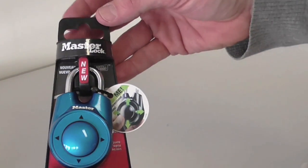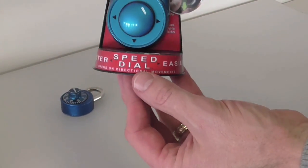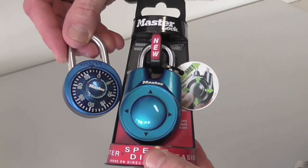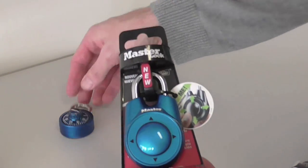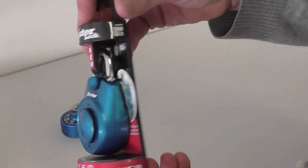Check out the new Master Lock Speed Dial. It's faster and easier is the claim. Here's the old traditional lock next to it. Combination lock. So I'm going to open this up and we'll just see how it works.